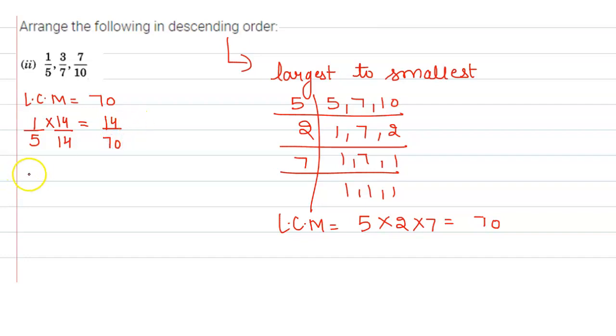Next is 3 by 7. So 70 divided by 7 is 10. So multiply and divide by 10. Here we get 30 upon 70.